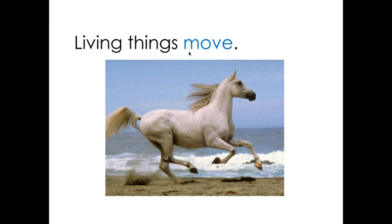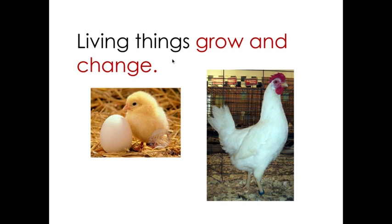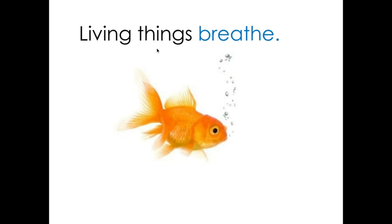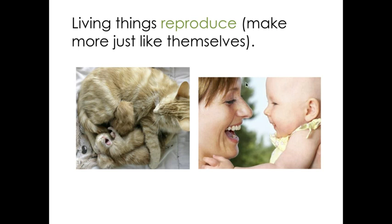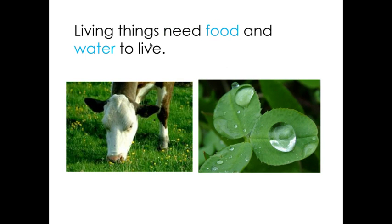Living things move. Living things grow and change — here we have a little chick that came from the egg, and that chick is going to turn into this big chicken. Living things breathe; you can see the fish has little bubbles that come up — that's it breathing underwater. Living things reproduce, which means they make more just like themselves — you see the little kitten and the baby. Living things need food and water to live; we couldn't survive without food and water.